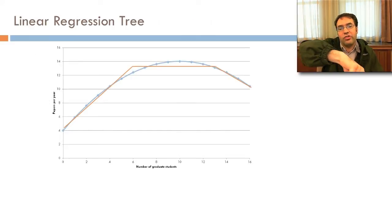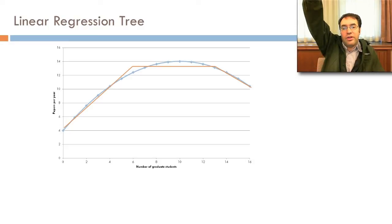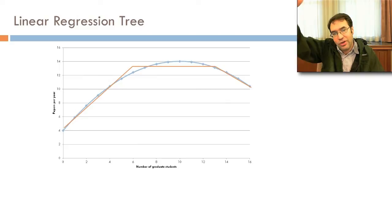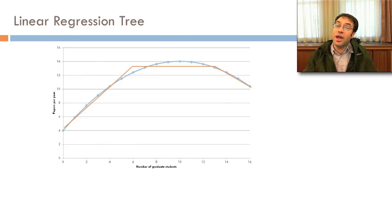And for example, if you had a linear regression tree, you could fit this as an M5 prime tree and say, it goes up linearly up until 6 graduate students, then it's flat through 13, and then it goes down again after 13. This may not perfectly capture your data, but it may actually be a clean way to describe the data.